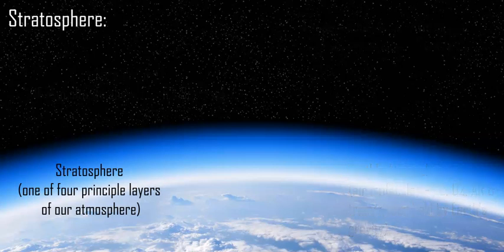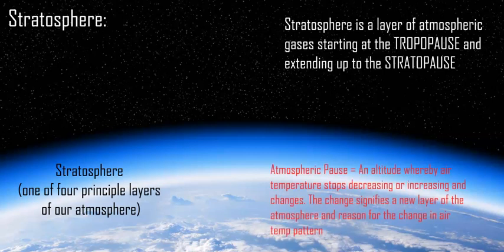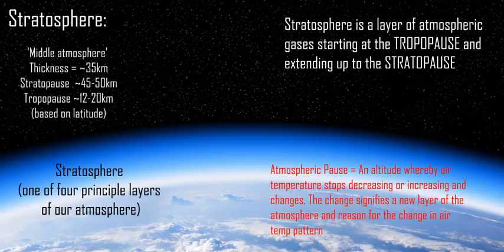The Earth's stratosphere extends from the tropopause to the stratopause, with a layer of air in between. The tropopause varies between 7 to 20 kilometers based on latitude, and the stratopause varies between 45 and 50 kilometers. So this layer is roughly 35 to 40 kilometers thick, sitting above the troposphere and below the mesosphere, and it is part of the middle atmosphere.